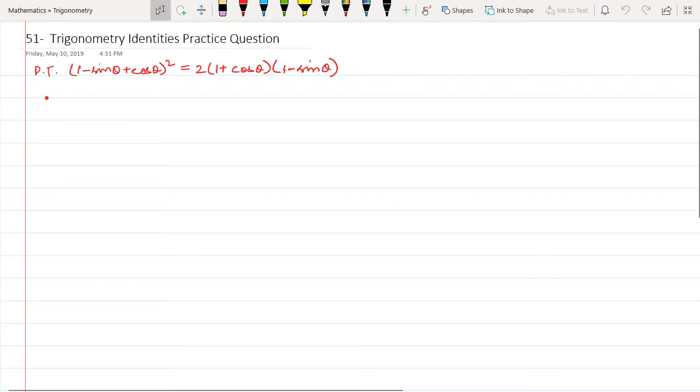The question says 1 minus sin theta plus cos theta whole square is equal to this. Now this expression, we will get this expression automatically if we open this bracket correctly.